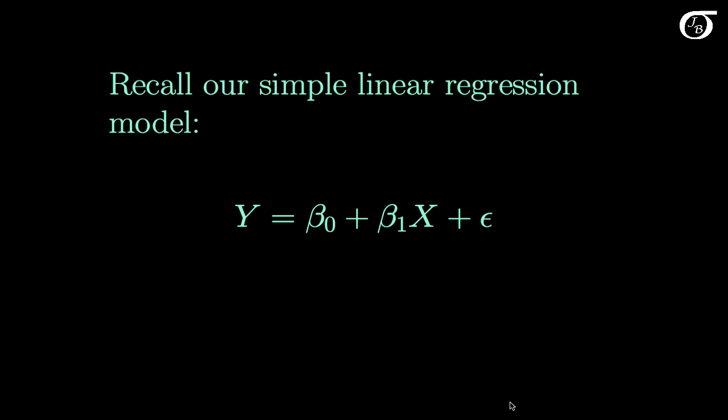Recall our simple linear regression model, where y is assumed to have this linear relationship with x. And epsilon is a random error component representing that the y's have some variability and they vary about this line.